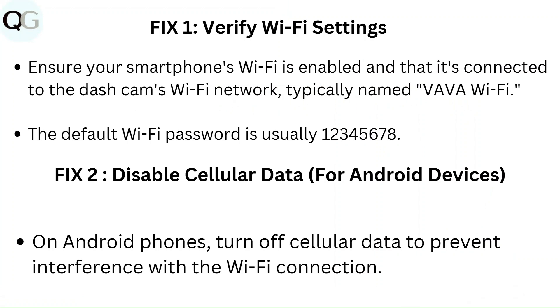Fix 2: Disable cellular data for Android devices. On Android phones, turn off cellular data to prevent interference with the Wi-Fi connection.